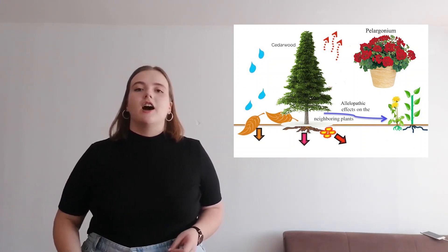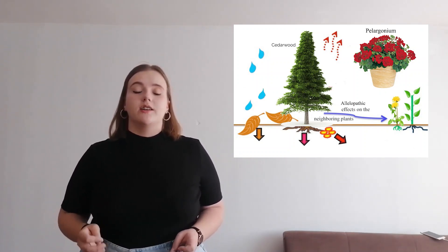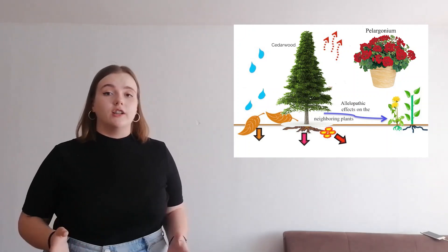Allelochemicals, or secondary plant metabolites, are released into the soil through plant roots, as well as with every rainfall and every leaf fall in the autumn.